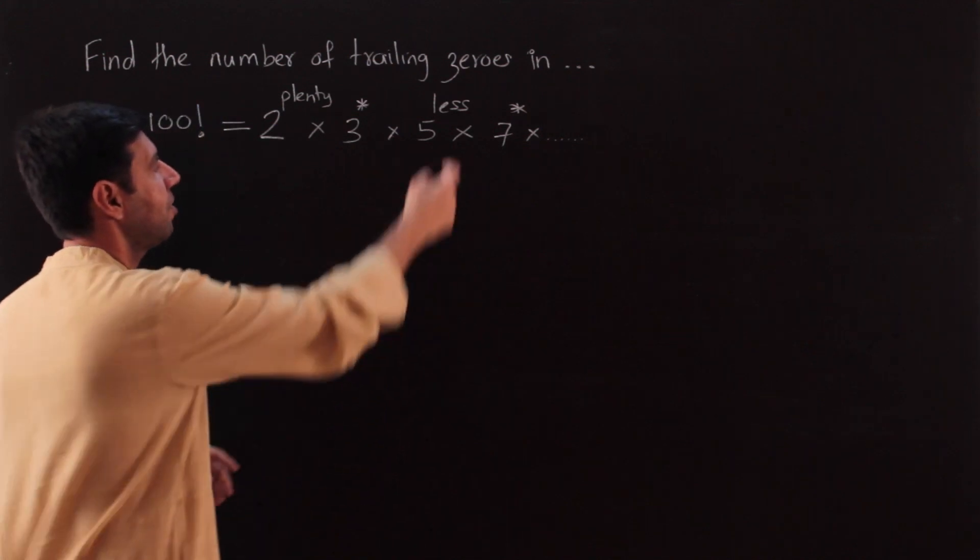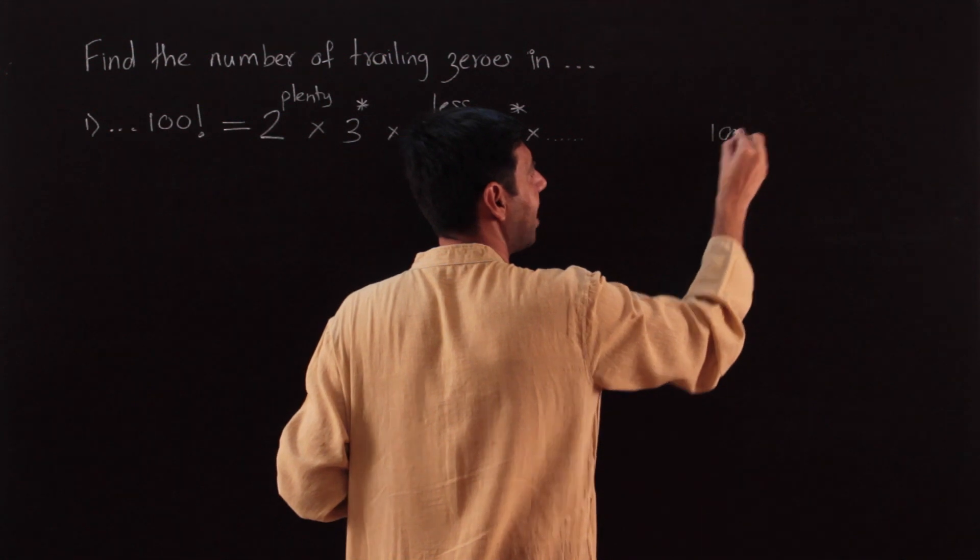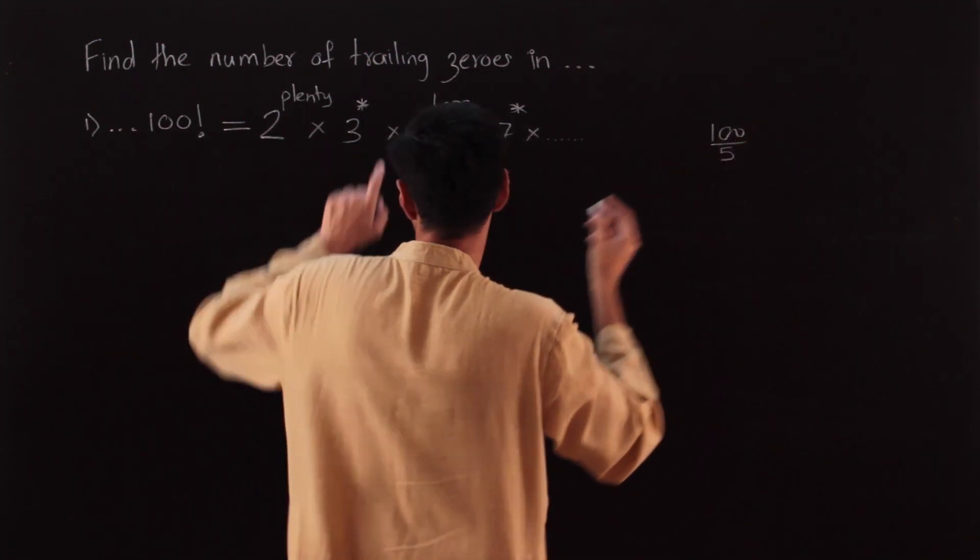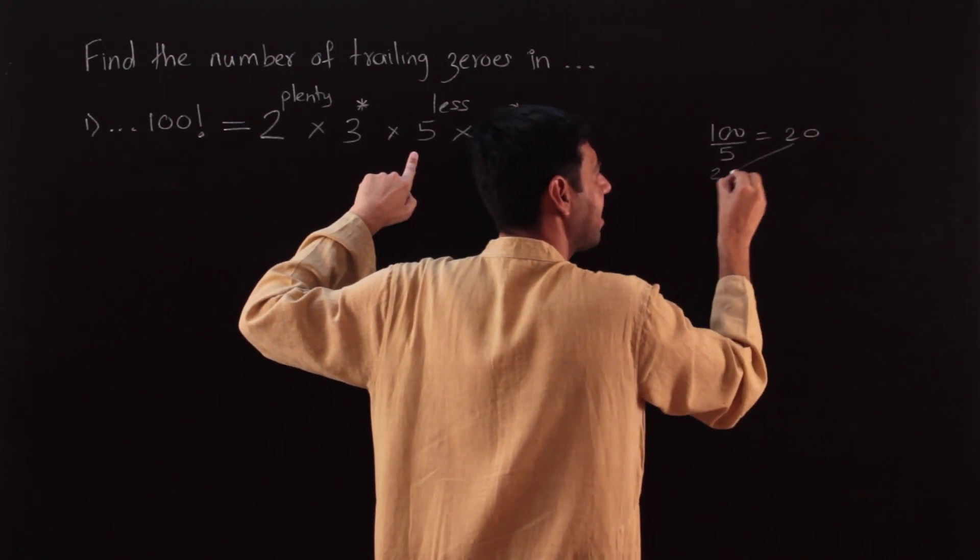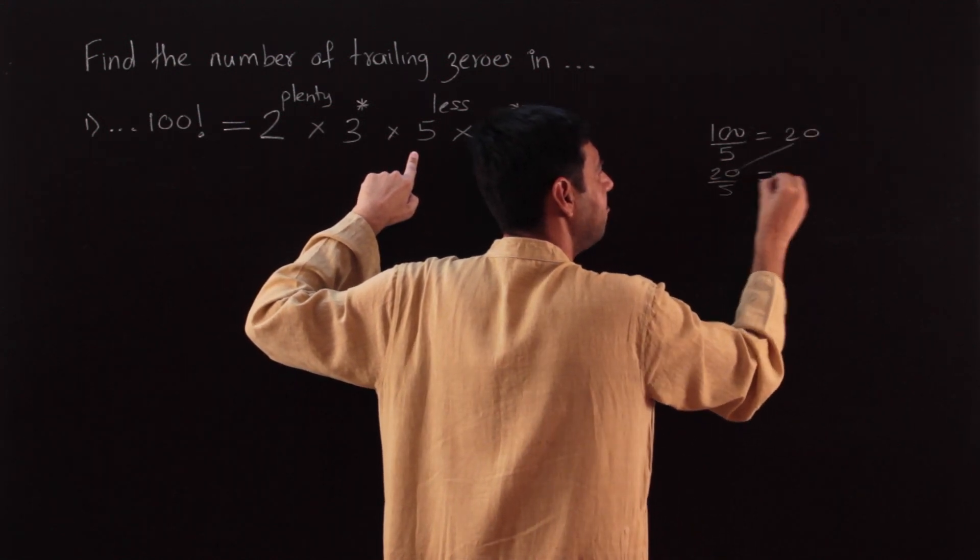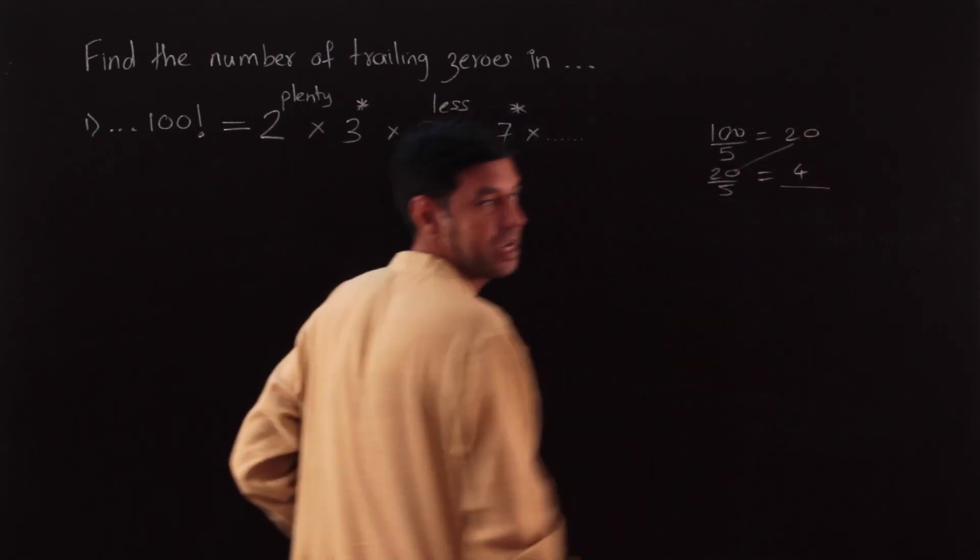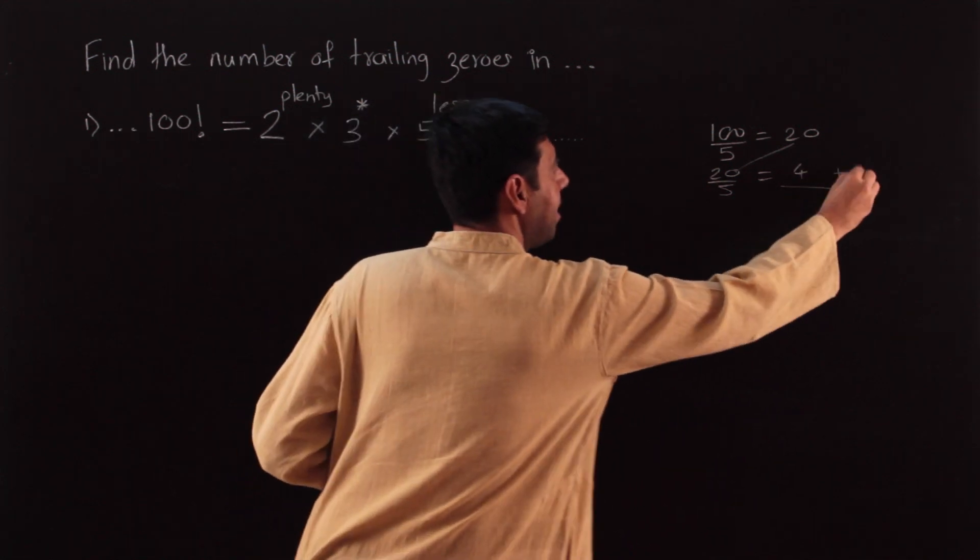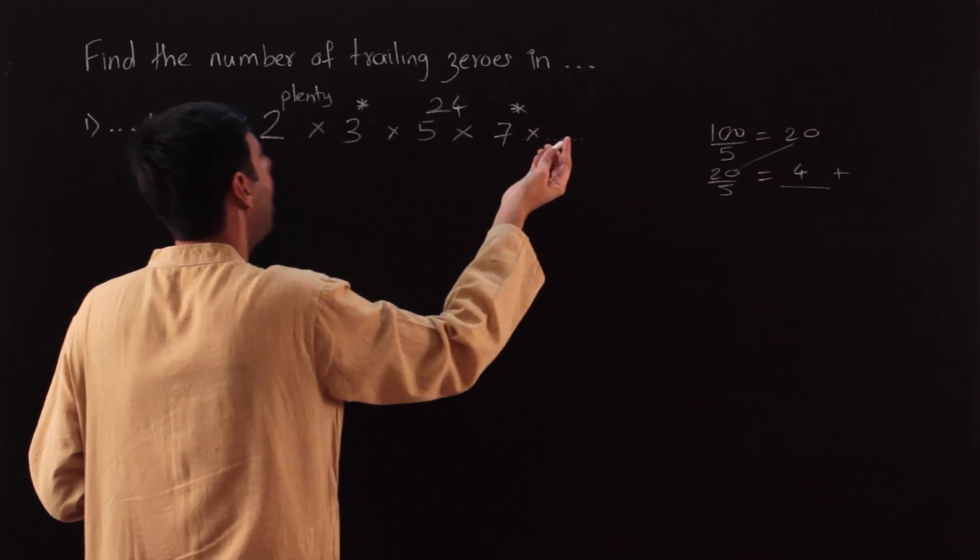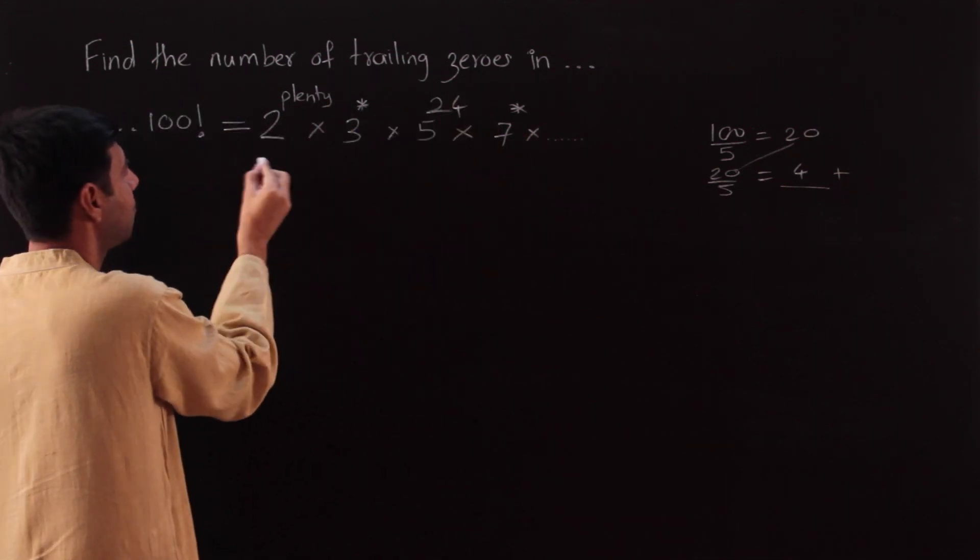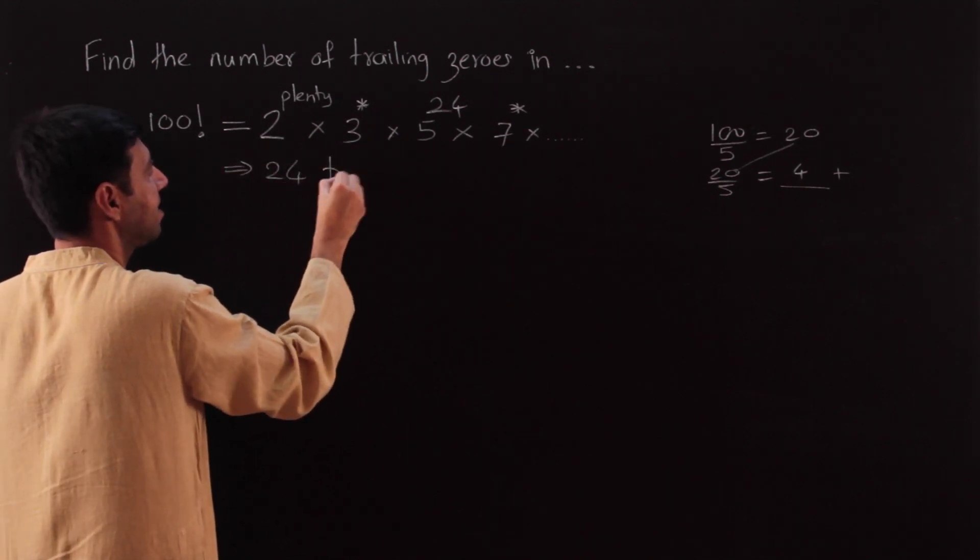So how do I find the power of 5? Just to remind you, we take the number itself, 100 divided by 5, since you are finding powers of 5, that is 20. Take the number 20 itself again, 20 by 5, which is 4. 4 is not divisible by 5, so the process stops here, and we will add them up. So the highest power of 5 is 24, and therefore 100 factorial will have 24 trailing zeros.